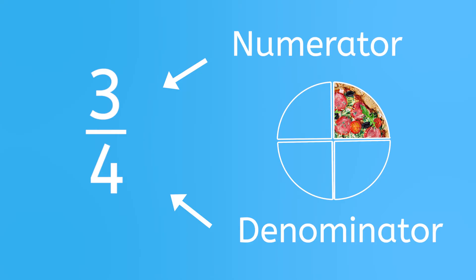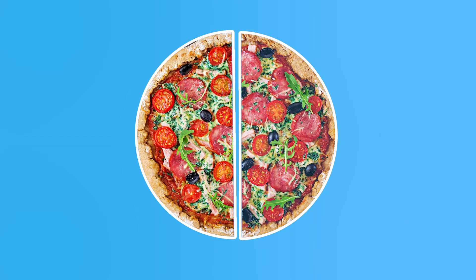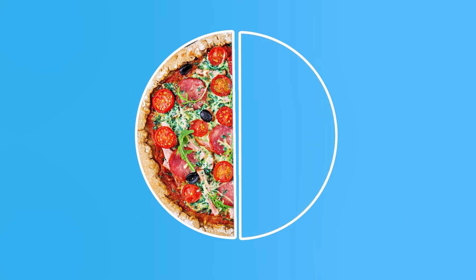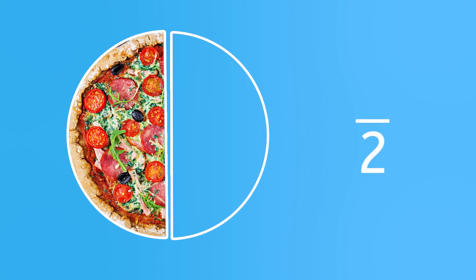The top number, or the numerator, tells how many pieces we have either taken away or how many we've eaten. In this case, your family ate three in all. So we say three-fourths, or three-quarters, of this pizza was eaten by your family. Cool, isn't it? Let's look at more examples. What fraction of this pizza is eaten? Just by looking at it, you can see that one-half is gone and one-half remains. Since one piece out of two is eaten, we write this fraction like this — two as the denominator and one as the numerator.